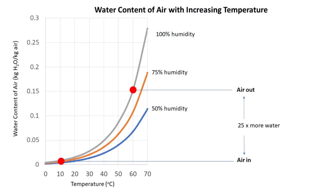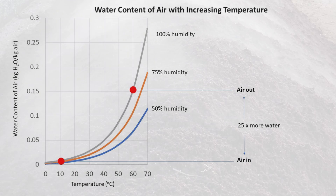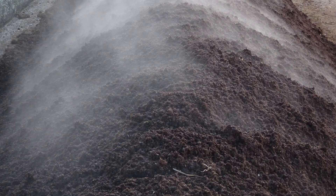Thirdly, the psychrometric curve informs us that air holds much more water as the temperature increases. Air at 60 degrees Celsius and 100% humidity holds 25 times more water than air at 10 degrees Celsius and 75% humidity. This means that as soon as there is air movement in the compost pile, moisture moves with it.